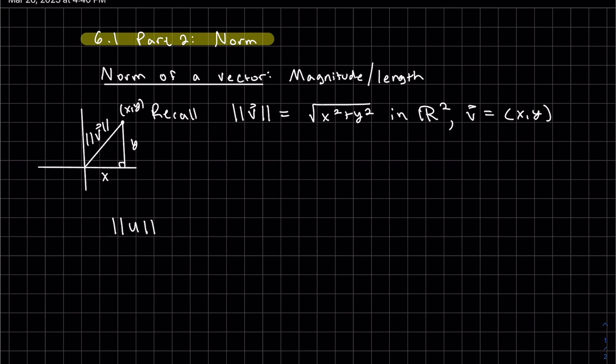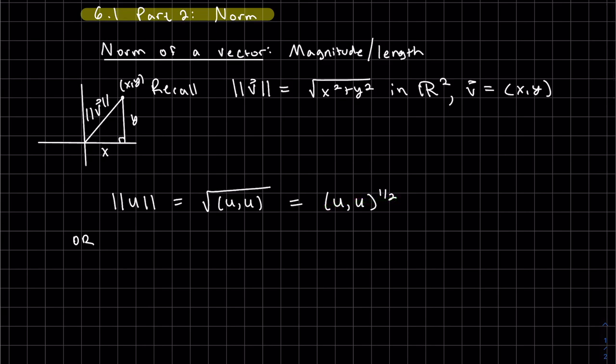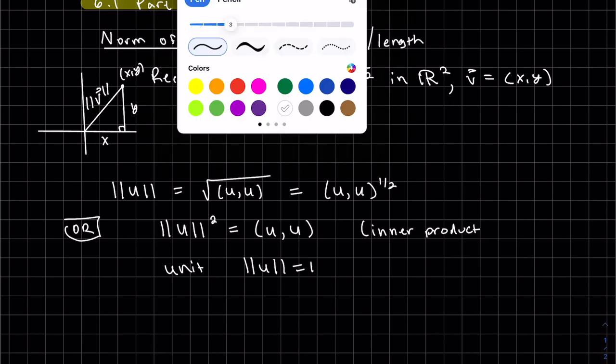So the magnitude of an element u in a vector space is pretty much the same. Call it the inner product. It's the square root of the inner product with itself. So if I square both sides, we have the magnitude squared, which is just the inner product. And of course, we have the unit length.